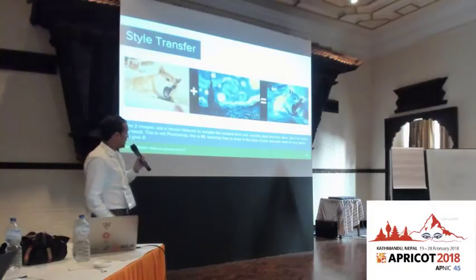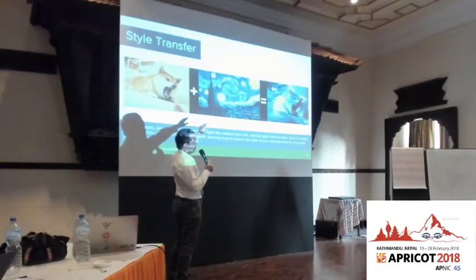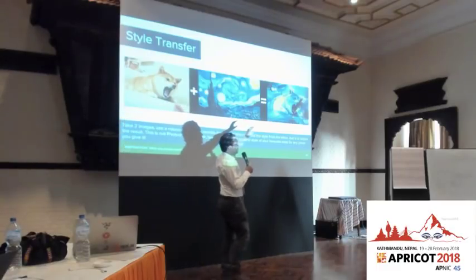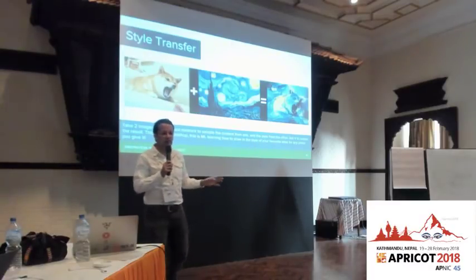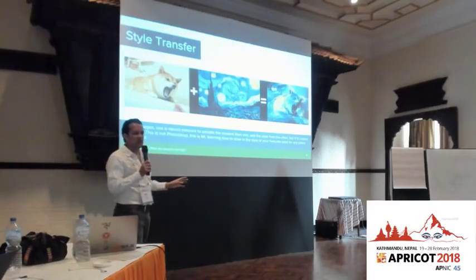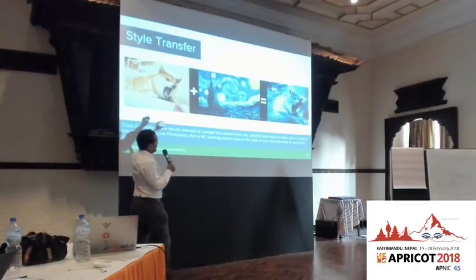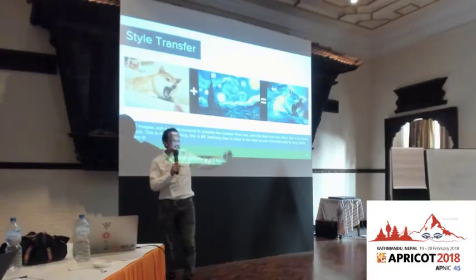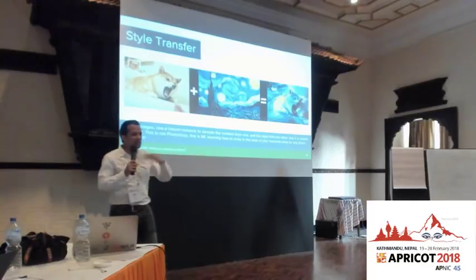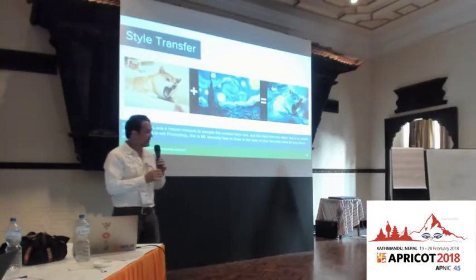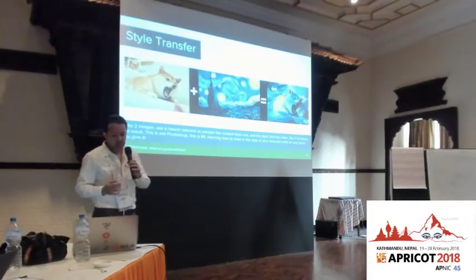Next up, style transfer. You have a regular image on the left, your favorite artist in the middle, and it re-renders your image in the style of your favorite artist. This is not Photoshop — it's not a simple filter. Machine learning learns the essence of the objects in the first image and the essence of the style in the second, then produces the output. Because that's a mathematical transformation, we can do it very fast and move things around in that space to have slightly different effects.